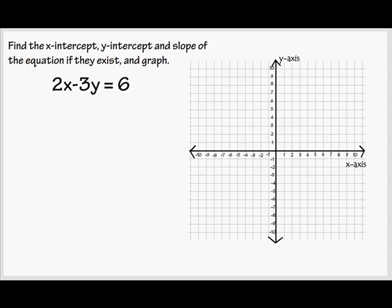Let's find the x-intercept, y-intercept, and slope of the equation, if they exist, and graph it. So here's our equation, 2x minus 3y equals 6.